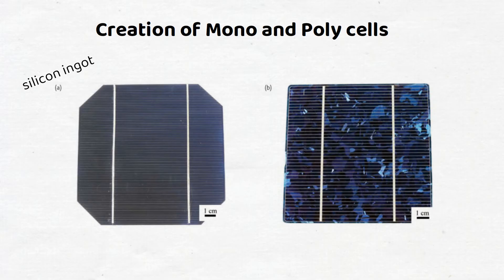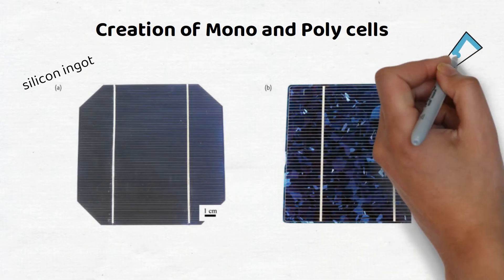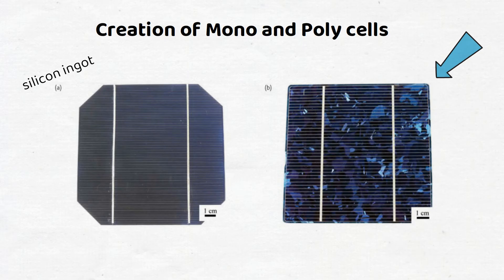Polycrystalline cells follow a similar process, but instead of pulling out the silicon crystal as with monocrystalline solar panels, they are instead left to cool down. The distinctive grains that can be seen in poly cells are created because the ingot is made from multiple silicon rocks.